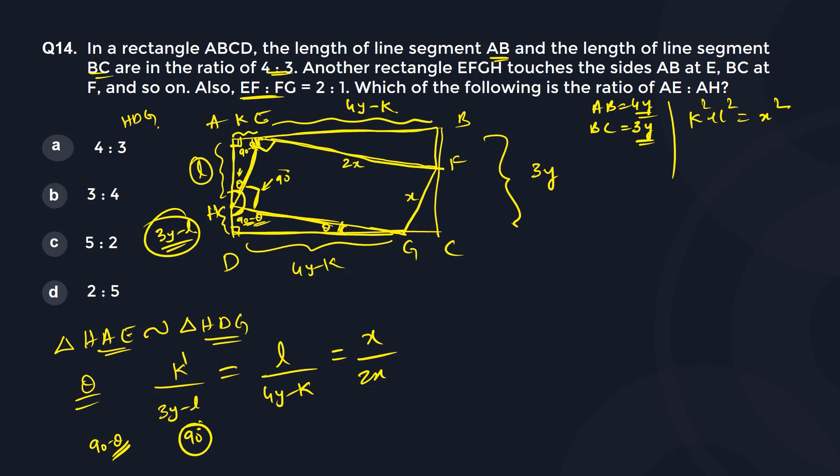So if I use these two, I will get K into 2 is equal to 3Y minus L. If I use these two, I will get 2L is equal to 4Y minus K.